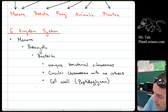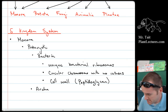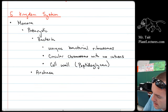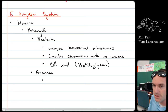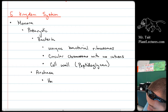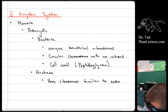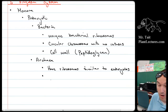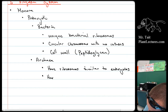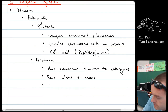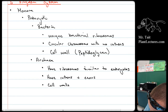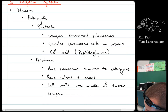Then you have the other grouping called archaea. Archaea have ribosomes that are much more similar to eukaryotic ribosomes. Their chromosomes are able to contain both introns and exons. And they have super diverse cell walls made of diverse compounds.